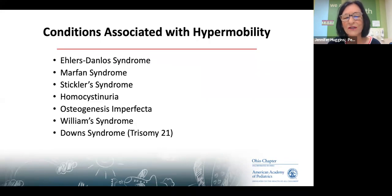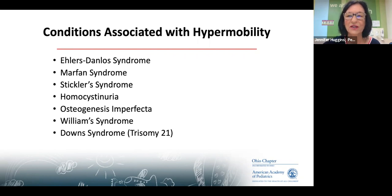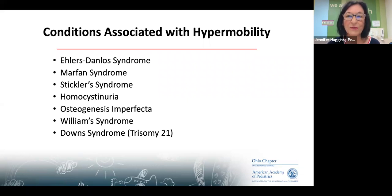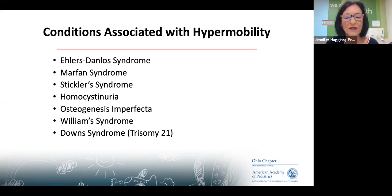There are conditions associated with hypermobility where it would be appropriate to get help from others. Things that will make you flexible include Marfan syndrome, and Stickler syndrome — where you have joint laxity in some places but not others. Many of these are things that geneticists will help you figure out, including homocystinuria and osteogenesis imperfecta.